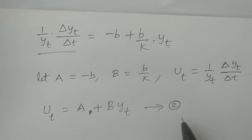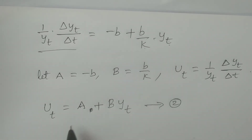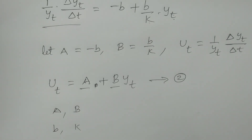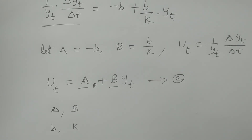This is a straight line, and by using the principle of least squares we can obtain the parameters capital A and capital B. After that, coming back and calculating the values of small b and k, so that with the values of a, b, and k, we can fit the logistic curve. This is the Hotlinks method for fitting the logistic curve. Thank you so much.